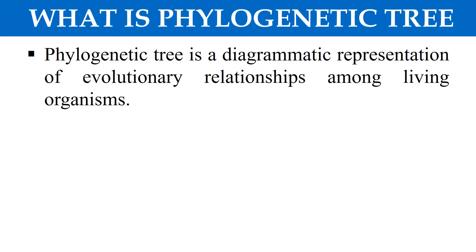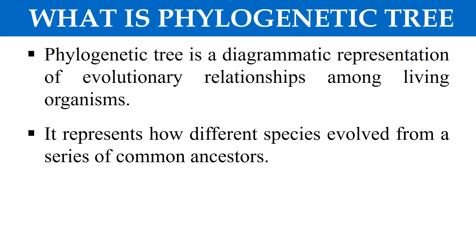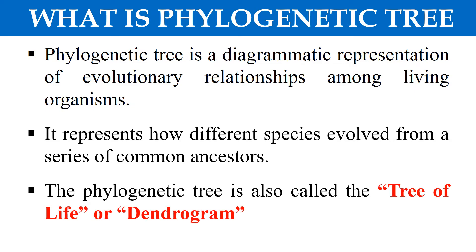So phylogenetic tree, it is a diagrammatic representation of the evolutionary relationship among the living organisms. By making this tree, you just show how the species are evolutionarily related with themselves. By this tree, you can search for the common ancestor of different species and also their evolutionary history. This phylogenetic tree may also be called as the tree of life or dendrogram.